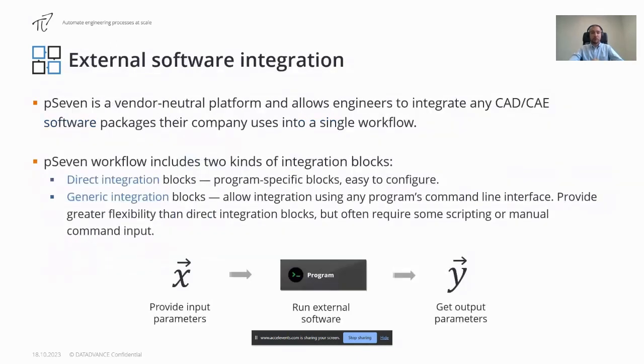Often engineering tasks require running third-party CAD and CAE tools. With pSeven it is possible to integrate such software inside the workflow to fully automate your design process. Integration blocks provide an interface between a pSeven workflow and some program, for example a CAD package or solver, making it possible to run simulation or analysis in this program and use its results in the workflow. All integration blocks can be divided into two groups: direct integration blocks, which are program-specific blocks. Their number is limited but they are quite easy to configure. And generic integration blocks, which allow integration of any program which has command line interface. Such blocks provide greater flexibility than direct integration blocks but often require some scripting or manual command input.